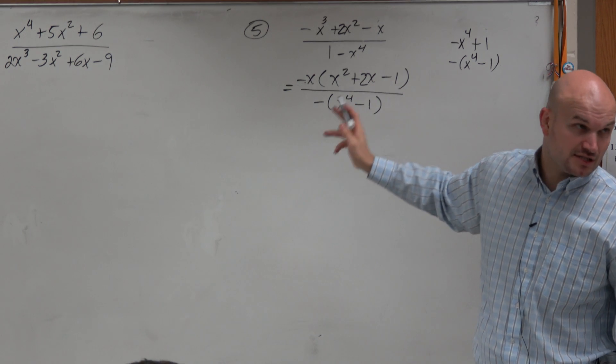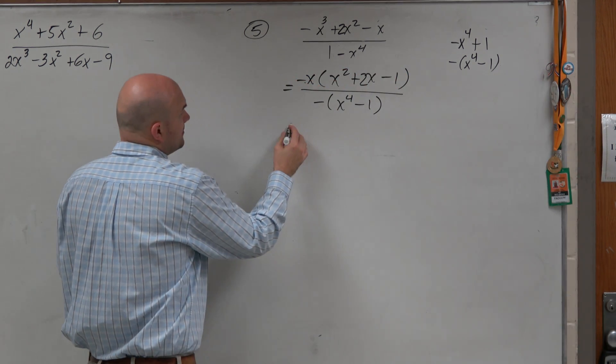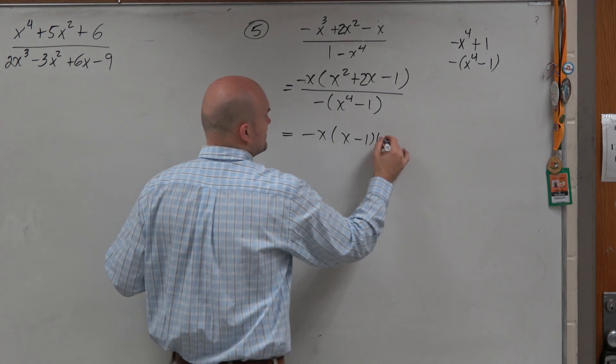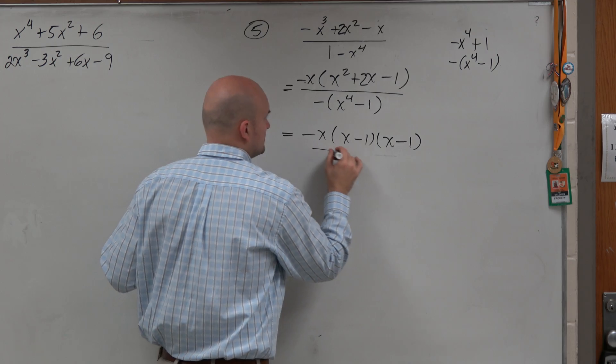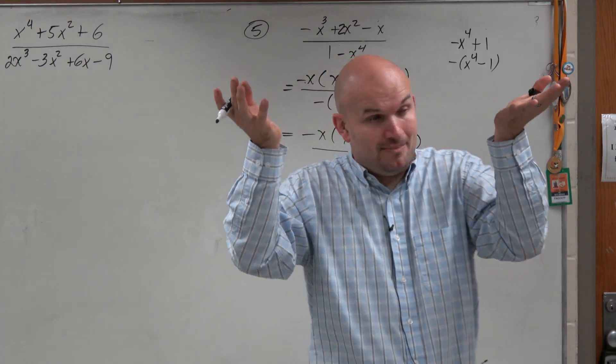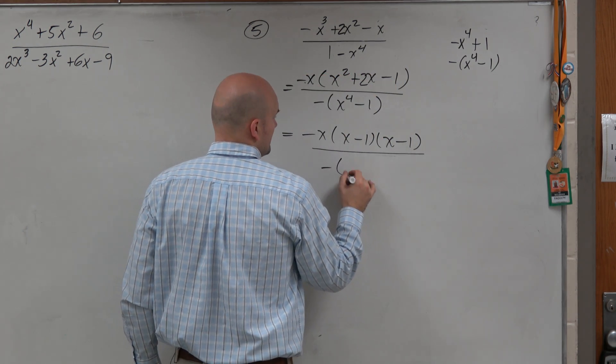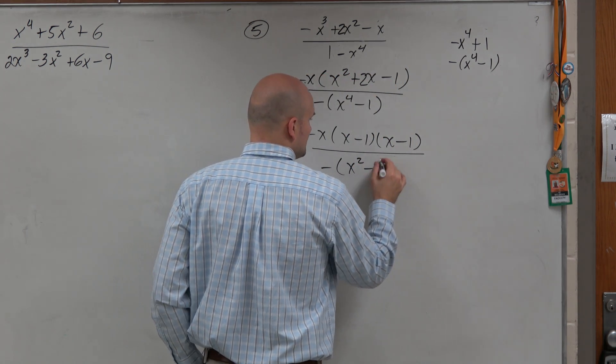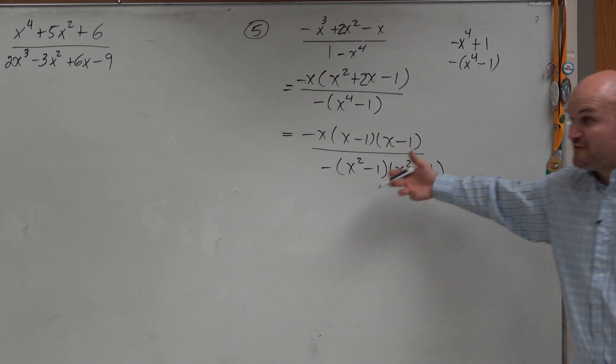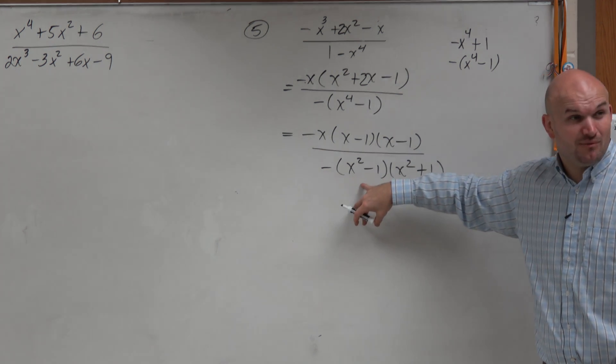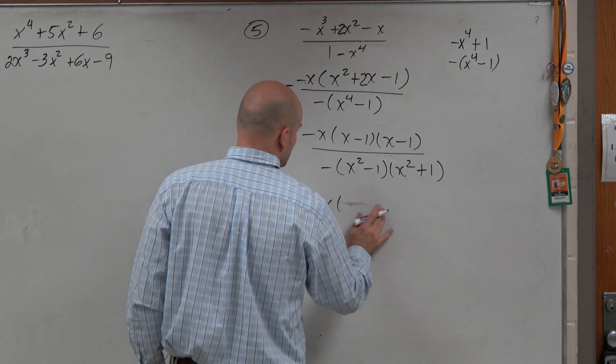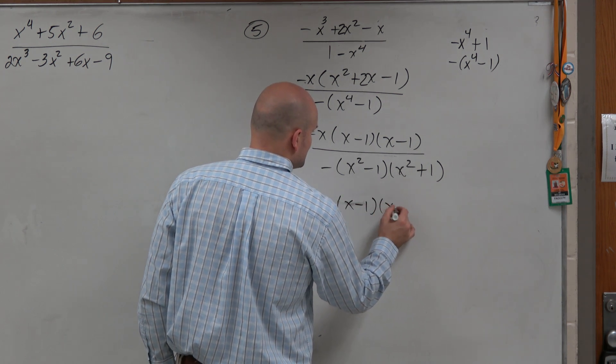Now I can factor this a little bit further. You can see here that I have x minus 1 times x minus 1. Here, you can see this is a difference of two squares, but it's kind of been raised up, which is really x squared minus 1 times x squared plus 1. And can I further factor this down? Because again, look at what I have. I have a difference of two squares again.